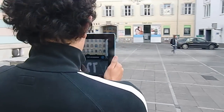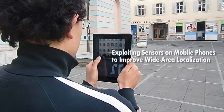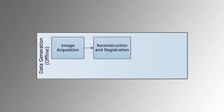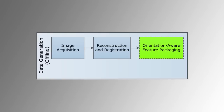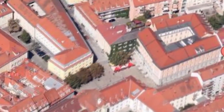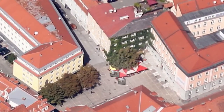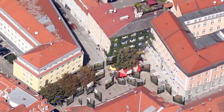In this work, we exploit sensors on mobile phones to improve wide area localization for augmented reality. The first part of our approach is an offline data generation step. A large number of images is acquired, serving as a base for reconstructing the environment.